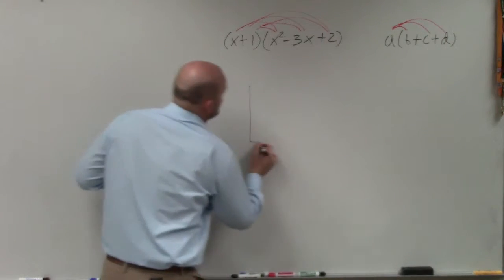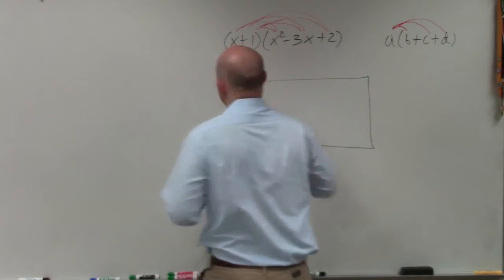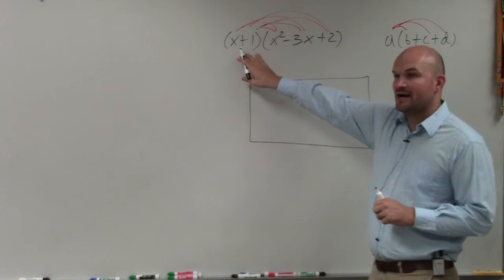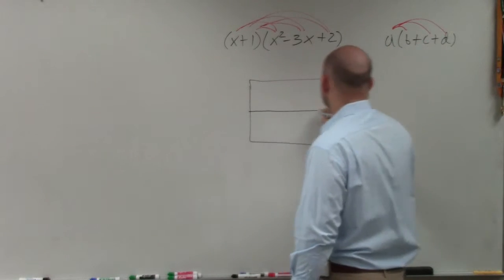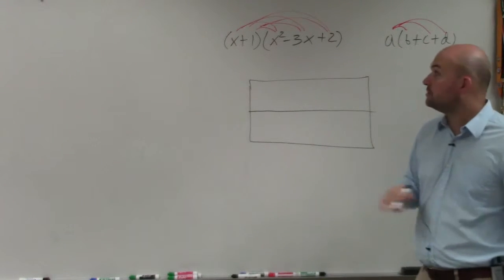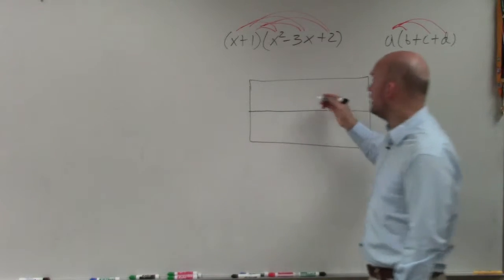However, as I mentioned, my preferred way is just to write a box. One of my lengths has two terms, so I'm going to have two rows. The other one has three terms, so I'll have three columns.